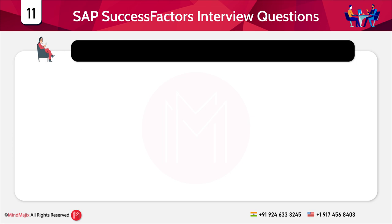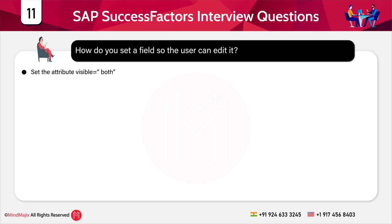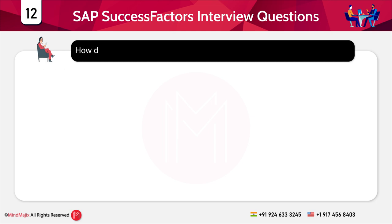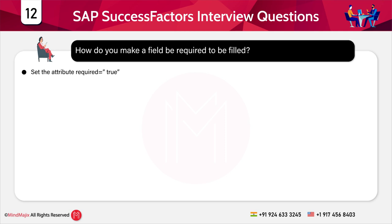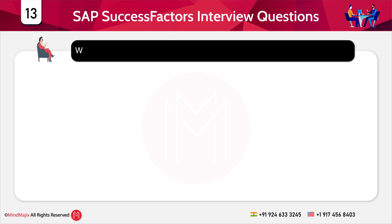The next question is: how do you set a field so that the user can edit it? For this purpose, you have to set the attribute visible equal to both. The next question is: how do you make a field required to be filled? You simply have to set the attribute required equal to true.